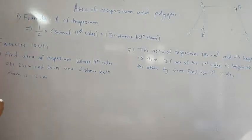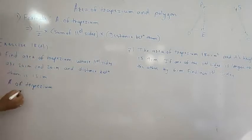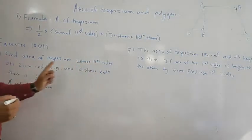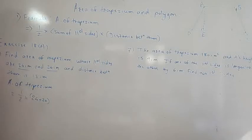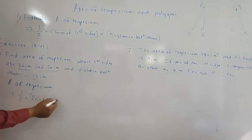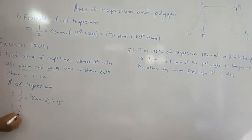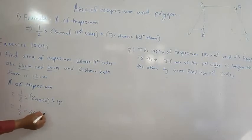We need to use the formula. Area of trapezium equals half, multiplied by the sum of the parallel sides, multiplied by the distance between them. The parallel sides are 24 and 20, so we add 24 plus 20. The distance between them is 15, so we multiply by 15.